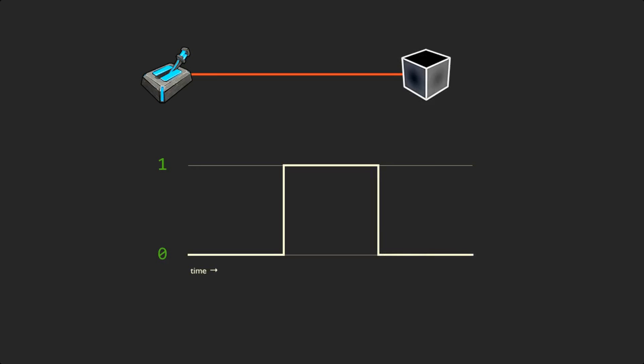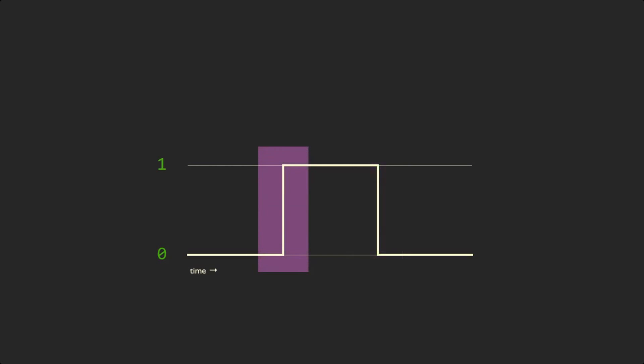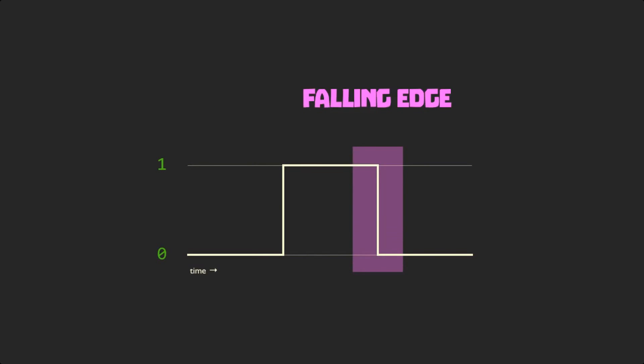But what if we don't want a constant signal? What if we want just a small pulse to tell us when the signal changes? If we're looking for changes in the signal, we're looking for these spots. The change from zero to one is called the rising edge, and from one to zero, the falling edge.